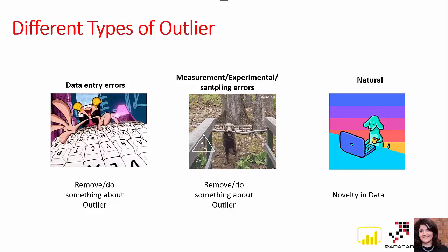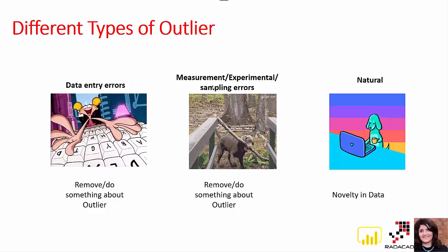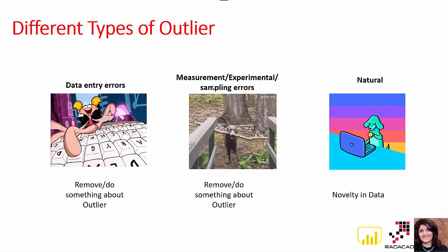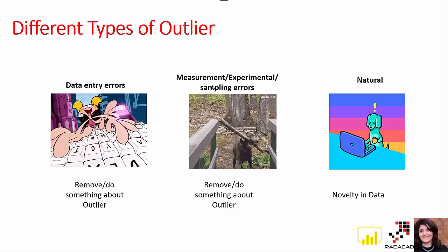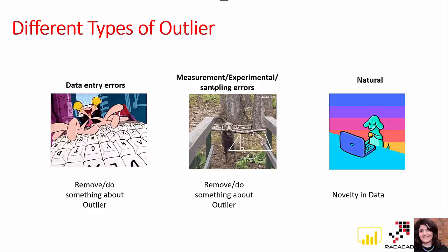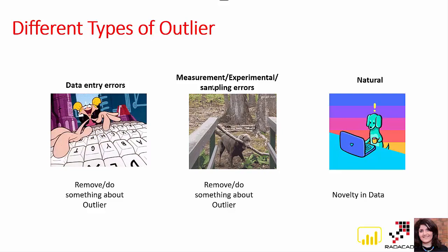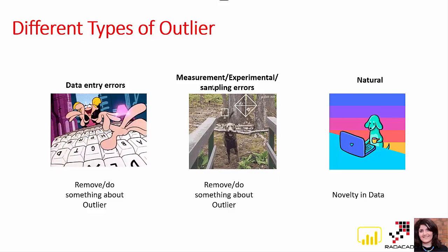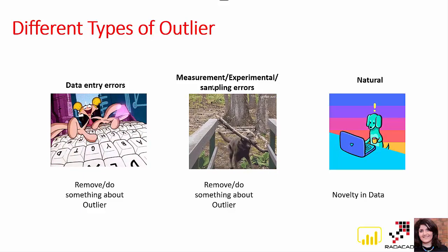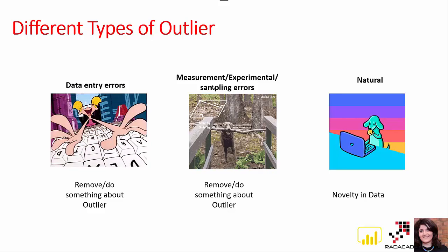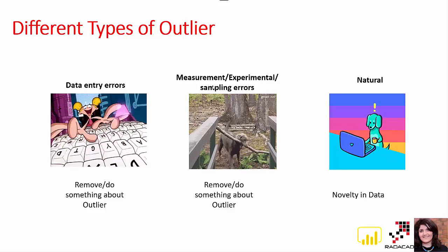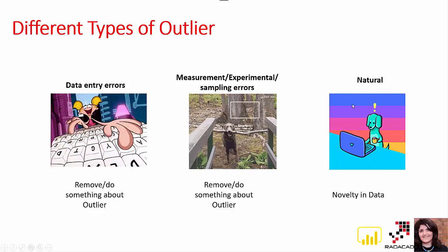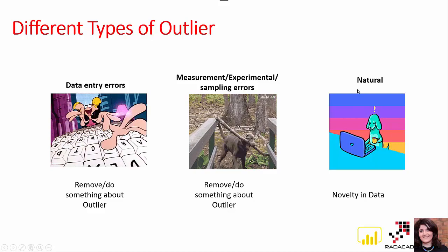Another cause is wrong measurement, experimental error, or problems in data collection. This is all about data gathering and data quality. Maybe we had some kind of problem in measurement — for example, a device that collects data had something go wrong, or a database had a performance issue — so that outlier may have happened because of that.